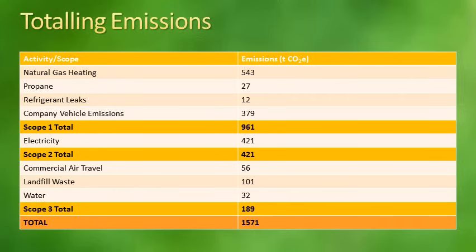Note that in this table, emissions are grouped according to scope — the level of control that the company can exercise over the activities which generate the emissions. Scope 1 emissions are energy emissions which occur on-site or using company-owned and operated assets. Scope 2 emissions are emissions which occur as a result of producing energy which is used by the organization. Scope 3 emissions are emissions that result from activities that impact the organization in some way, but are emitted by assets not owned and operated by the organization. For more information on scopes, please see the presentation 'Introduction to Carbon Footprinting' by E3 Solutions.